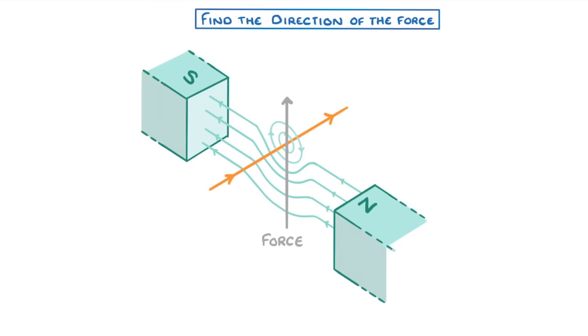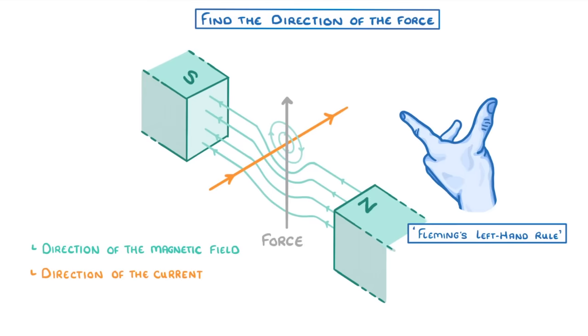To find the direction of the force, we need to know two things: the direction of the magnetic field and the direction of the current in the wire. To understand how they affect the force though, we use something called Fleming's left hand rule, which involves taking your left hand and pointing your thumb up, your first finger forwards, and your second finger out to the side.